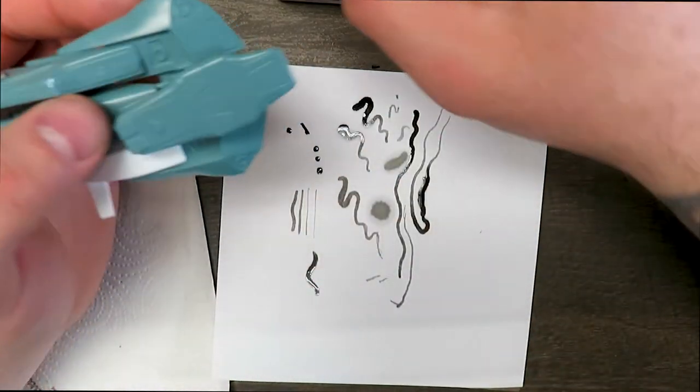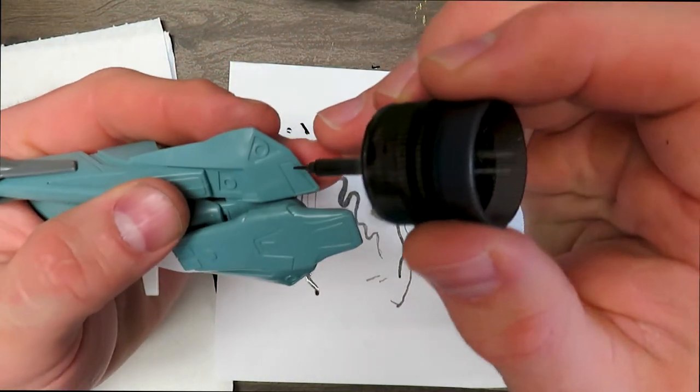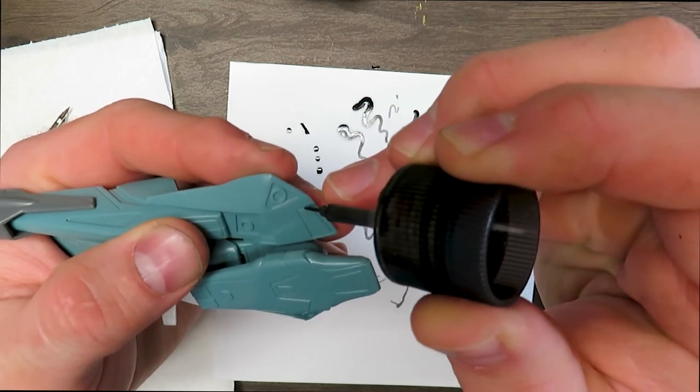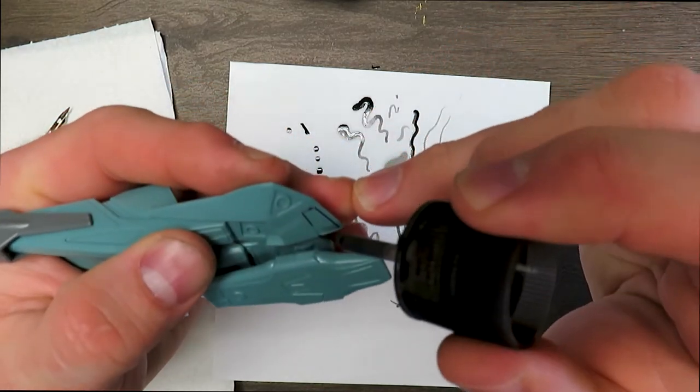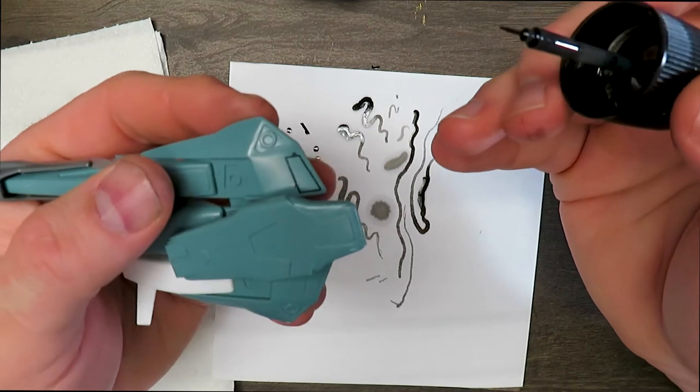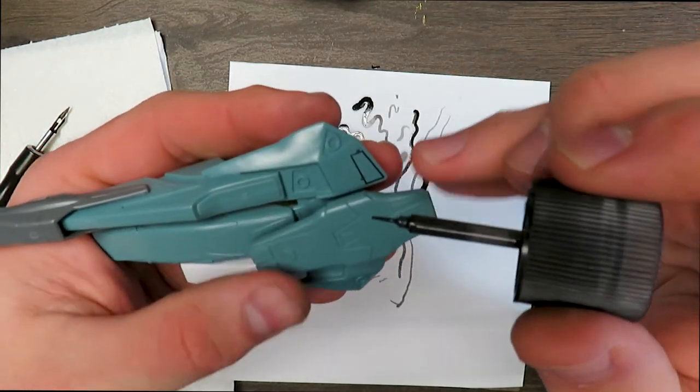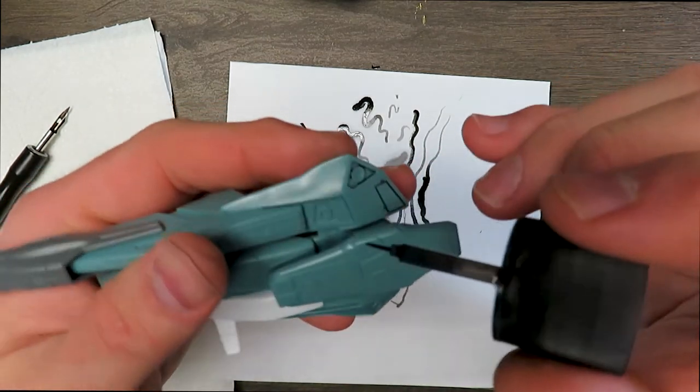So when you're doing like regular panel lining with just the brush applicator you just come in and touch and the capillary action carries the oil around the groove, and then you can just come back later and clean up any imperfections that you have with some mineral spirits because that's what I do. That really brings out the details in your model.